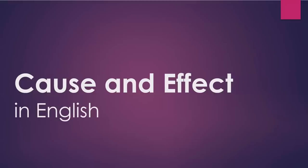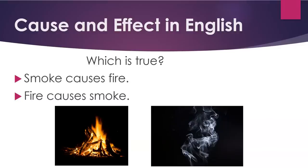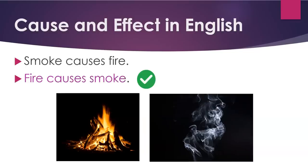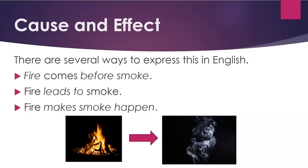Cause and effect in English. Which is true: smoke causes fire, or fire causes smoke? Fire causes smoke. There are several ways to express this in English. Fire comes before smoke. Fire leads to smoke. Fire makes smoke happen.